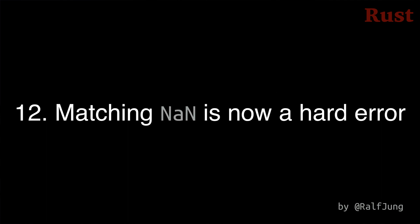Number 12: Matching on the floating point value for not-a-number never made sense, because the value is not supposed to be comparable with anything, even itself. So the warn-by-default lint has been changed to a compiler error.